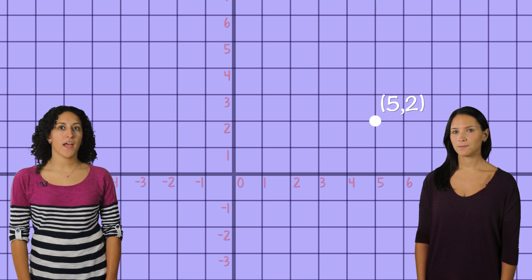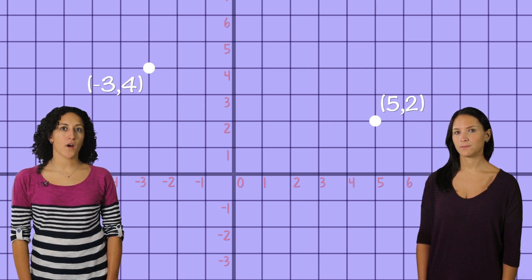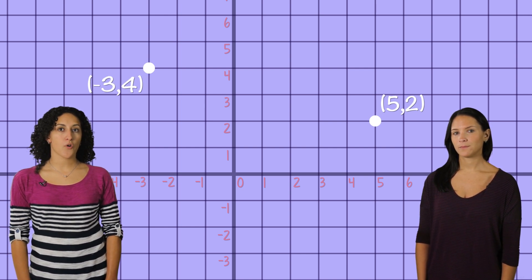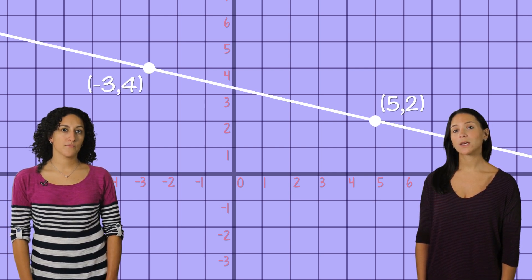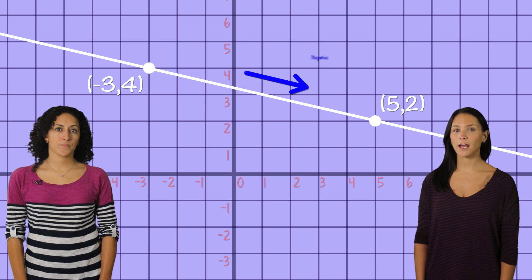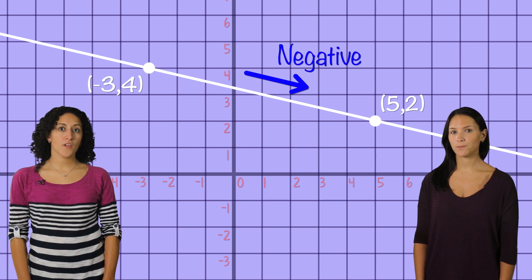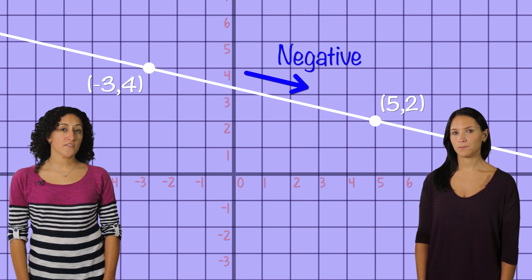Here's our coordinate plane. Let's grab our two points, 5, 2, and negative 3, 4, and then draw our line. We can clearly see that the line is going down. That means negative slope.